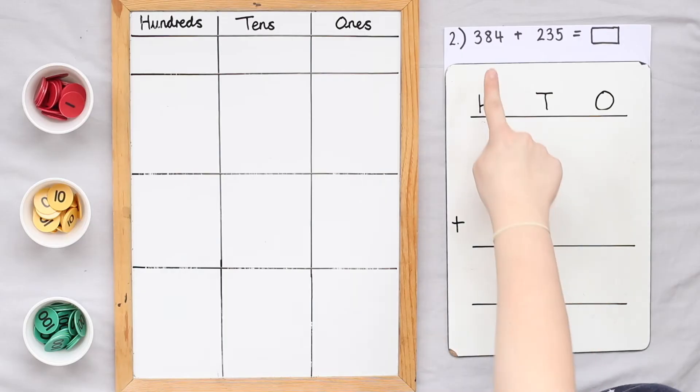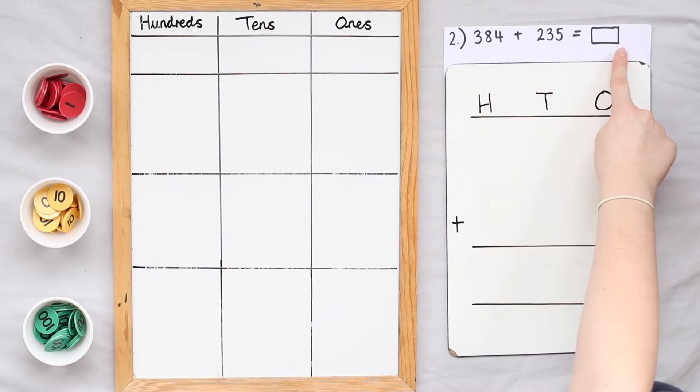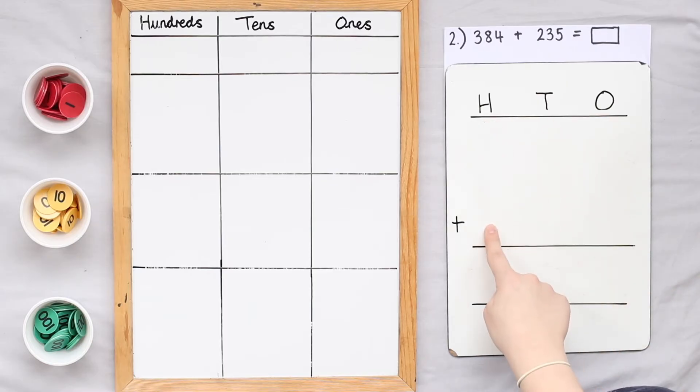In this calculation we'll be solving 384 add 235 equals the sum. That's addend plus addend equals the sum. I've set out my calculation vertically. I have my ones column, my tens column, my hundreds column. I have my operation symbol at the side, my equals sign and space for my sum.